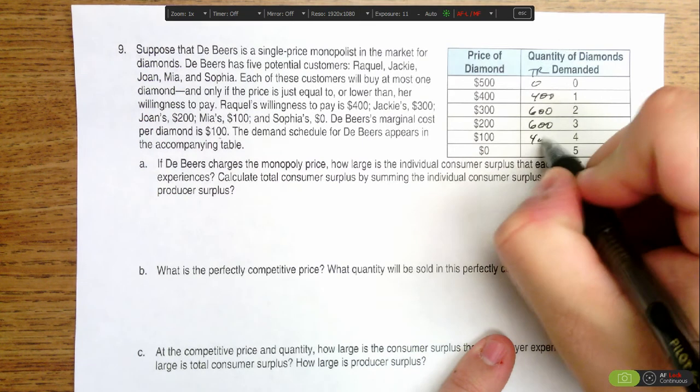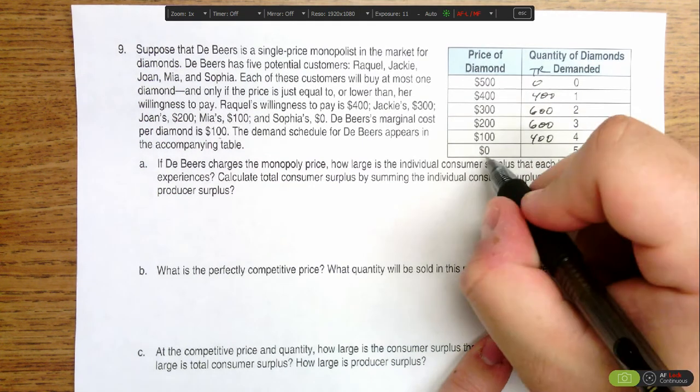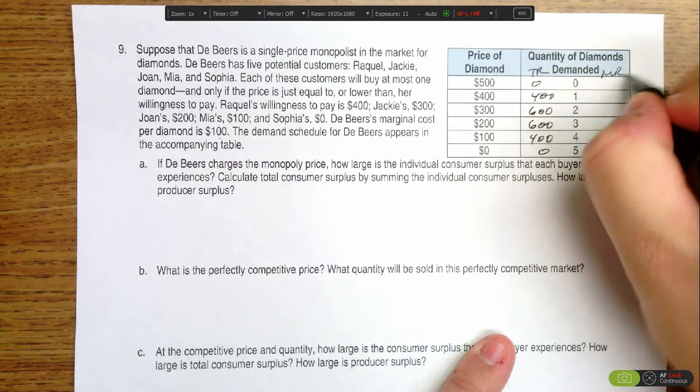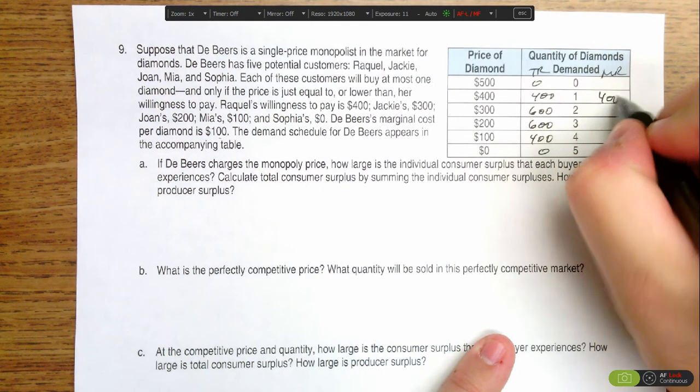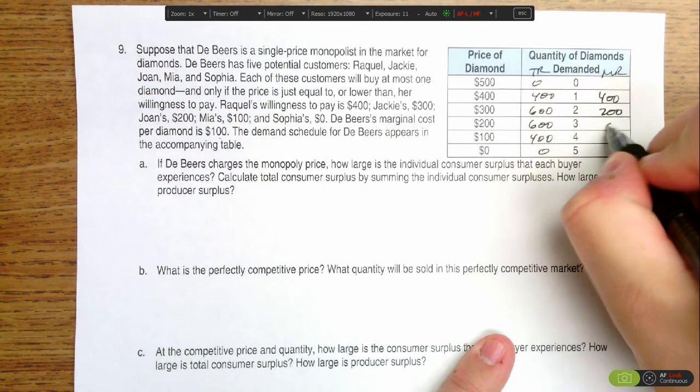If I sell four, there's $400 in total revenue, and if I sell five, I have to charge nothing, so I get no revenue at all. So marginal revenue here is $400, $200, $0, and negative $200.